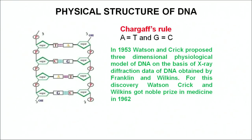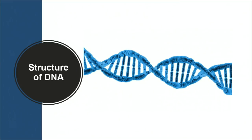Adenine always pairs with thymine through two hydrogen bonds and guanine always pairs with cytosine through three hydrogen bonds. The base composition of DNA obeys Chargaff's rule: the number of adenine present in DNA equals the number of thymine, and the number of cytosine equals the number of guanine. The diameter of DNA is 20 nanometers. Adjacent bases are separated by 0.34 nanometers. The length of one complete turn of the helix is 3.4 nanometers, so there are 10 base pairs per turn.